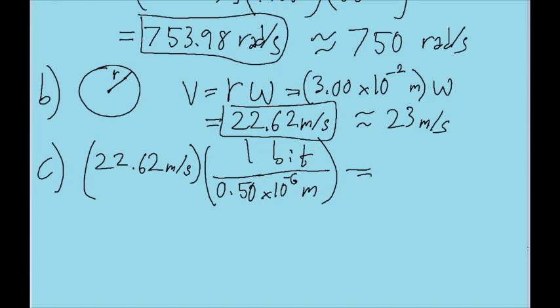If you put that into our calculator, we find about 4.5×10^7 bits per second. So that is how many bits are being read each second by this reader. And that's it for this problem.